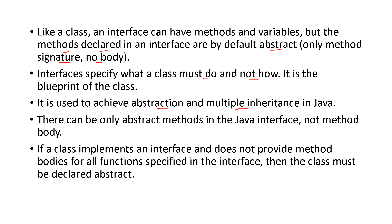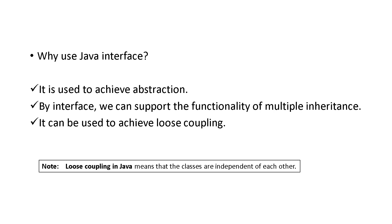There can be only abstract methods in a Java interface — no method body. Only the method abstraction is there; it tells the class what method is there, and no definition. The reasons why we use a Java interface are: to achieve abstraction, to do multiple inheritance, and to achieve loose coupling.